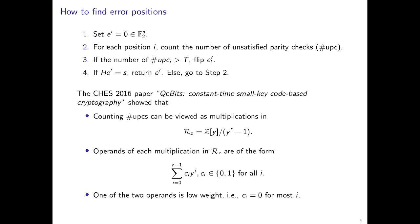Actually, as shown in the CHES 2016 paper QcBits, constant-time small-key code-based cryptography, the operation of counting the number of unsatisfied parity checks can be viewed as multiplications in another ring, RZ, which is Z[Y] divided by (Y^2R - 1). And operands of each multiplication in RZ must have coefficients in a set of {0, 1}. Also, one of the two operands must be low weight. Essentially, the multiplications in RZ are similar to the multiplications in R that I highlighted in red in the previous slide.